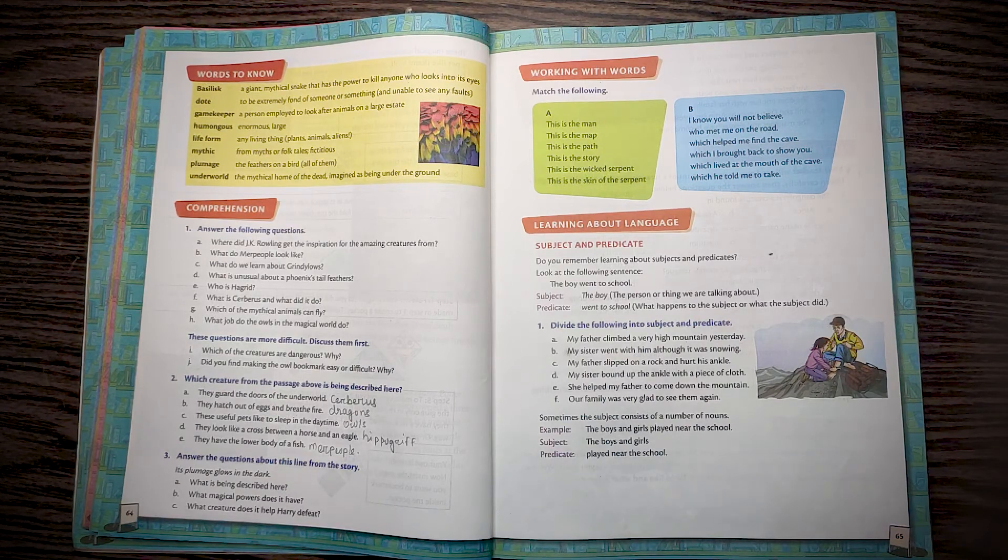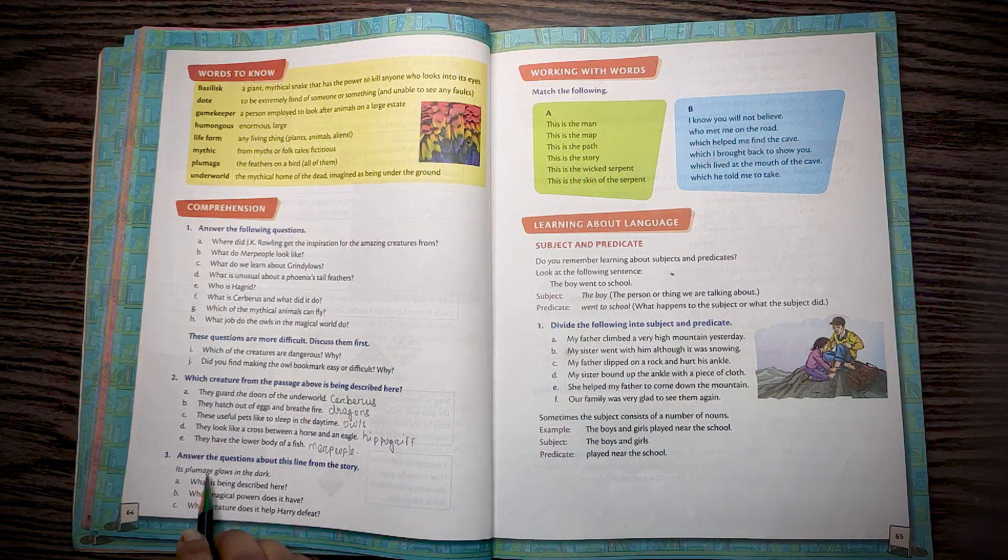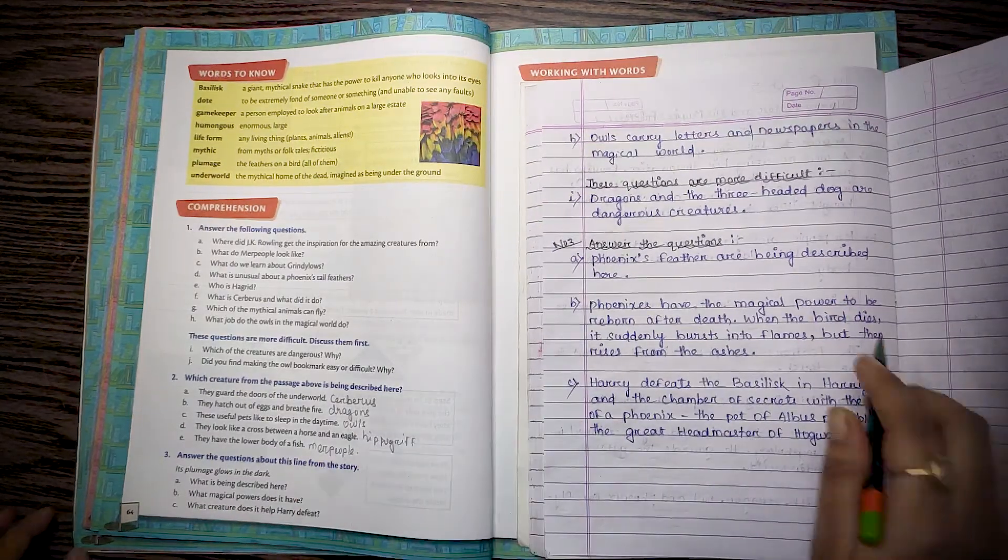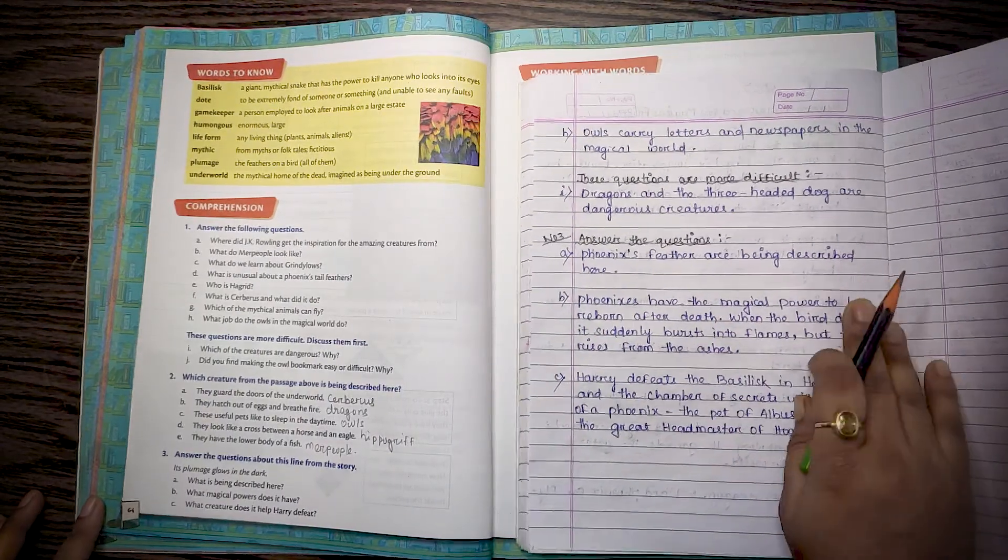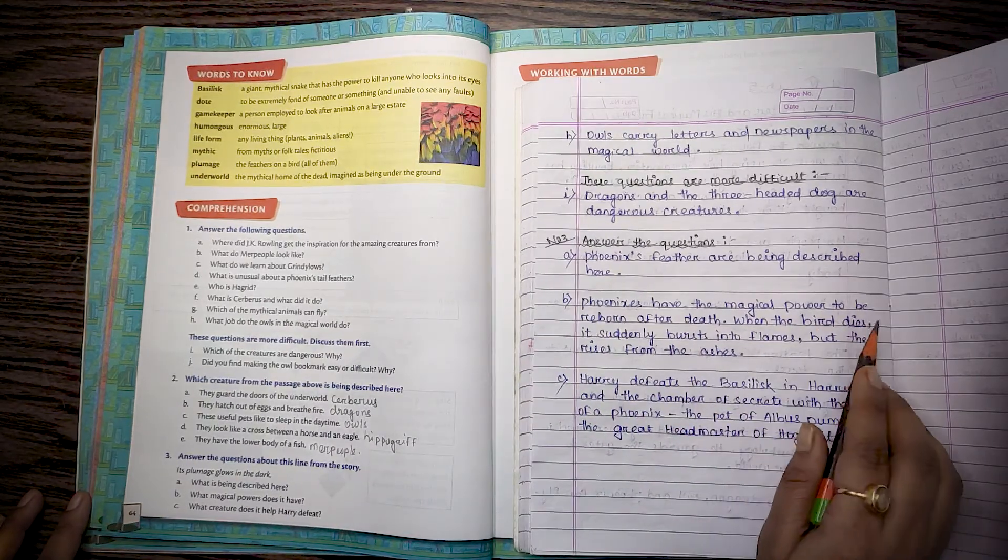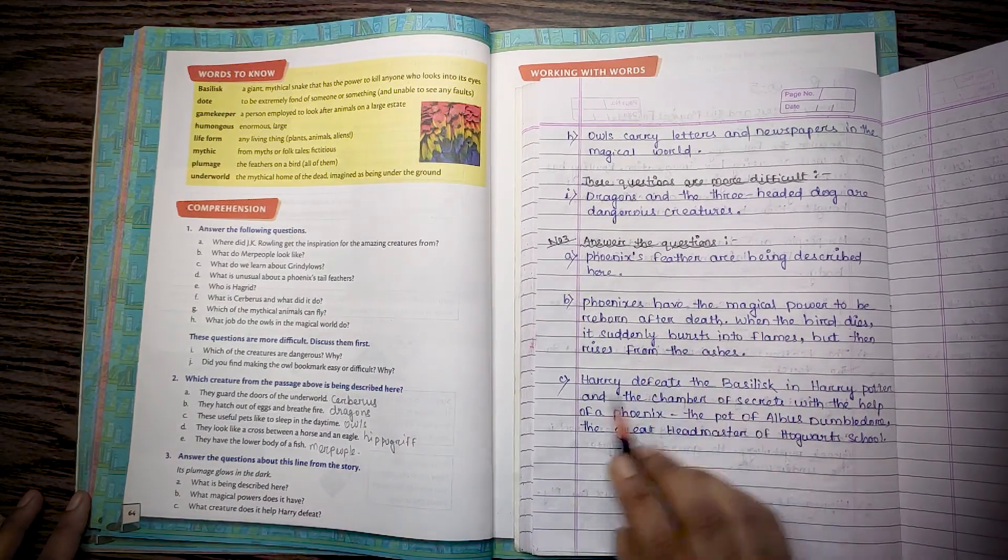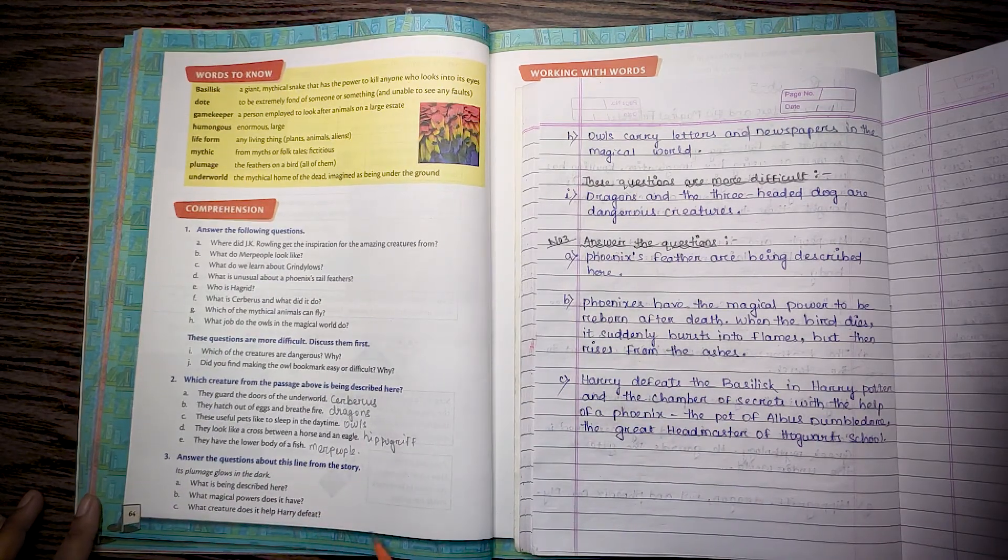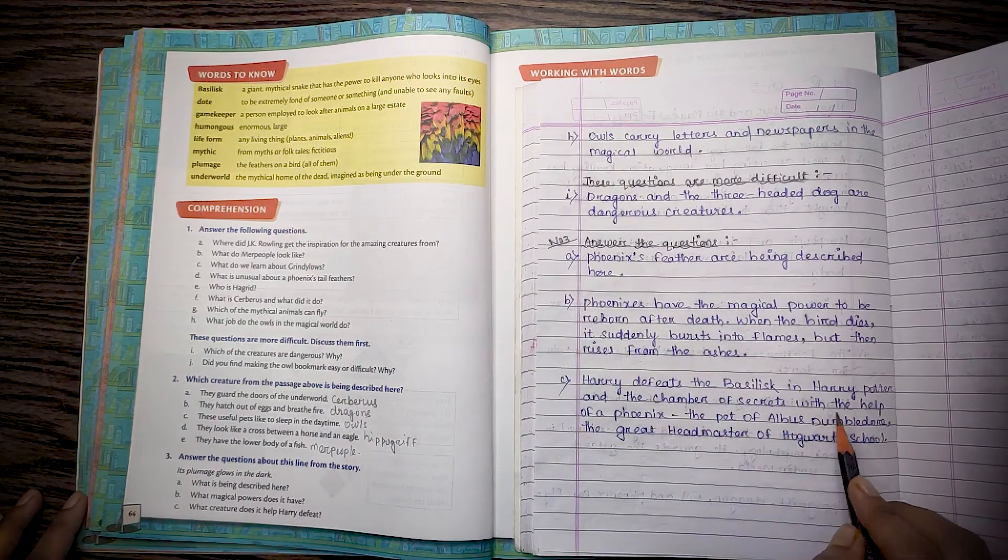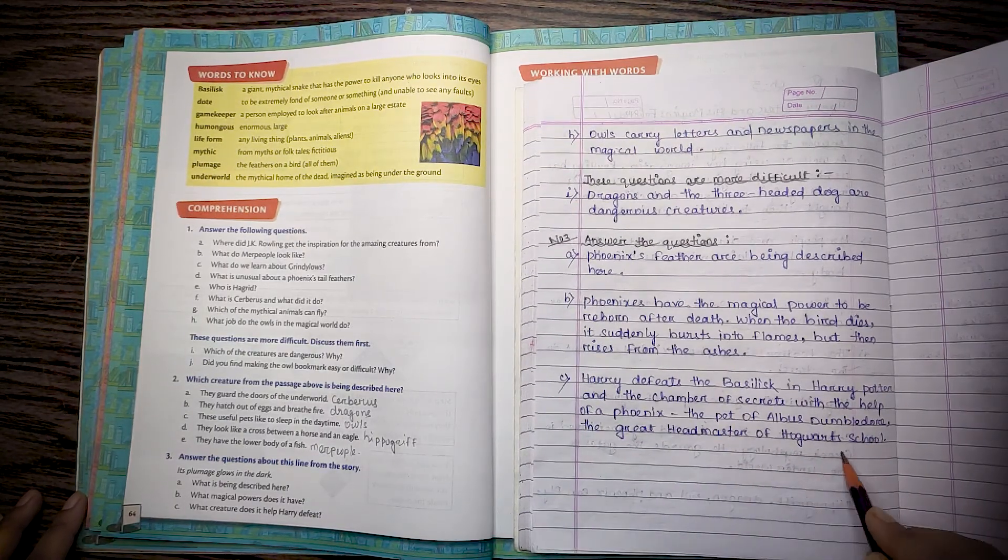Number 3: Answer the following questions about this line from the story. Its plumage glows in the dark. Question A: What is being described here? Phoenix feathers are being described here. Question B: What magical powers does it have? Phoenixes have the magical power to be reborn after death. When the bird dies, it suddenly bursts into flames but then rises from the ashes. Question C: What creatures does it help? Harry defeats the basilisk in Harry Potter and the Chamber of Secrets with the help of a phoenix, the pet of Albert Dumbledore, the great headmaster of Hogwarts School.